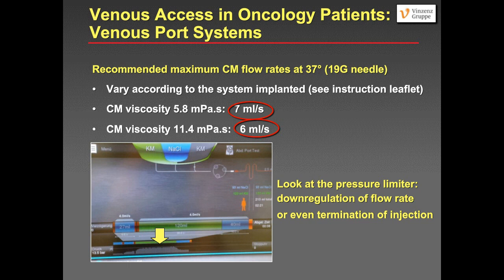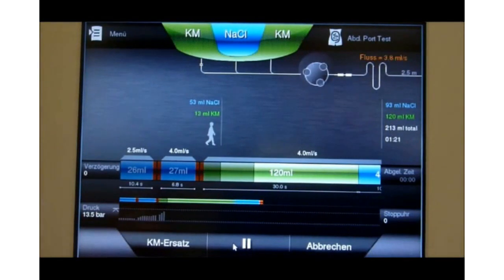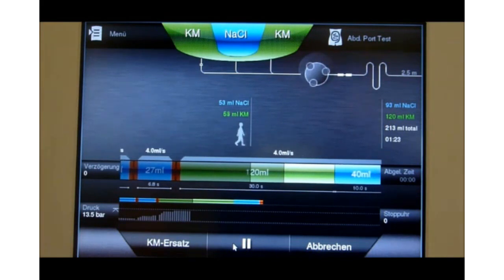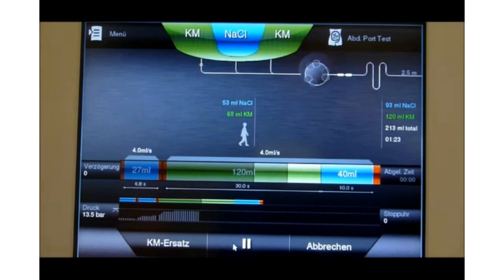The problem is that if you go too high during injection, the pressure limiter of the power injector will down-regulate the flow rate, or even terminate the injection. Here is a screenshot from a power injector showing how we hit the pressure limiter and the flow rate is down-regulated. A video shows this in real time: immediately after the start of contrast administration, we hit the pressure limit and the rate drops to 2.2 mL/sec or even below, and it could even terminate the injection if resistance is too high.